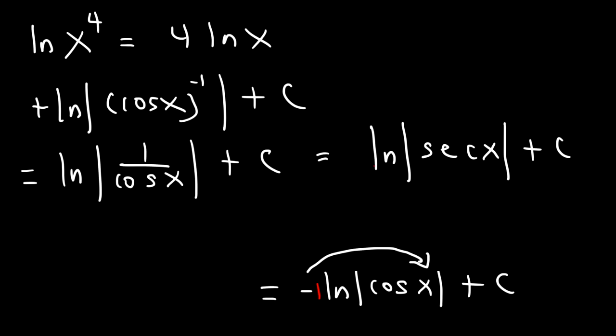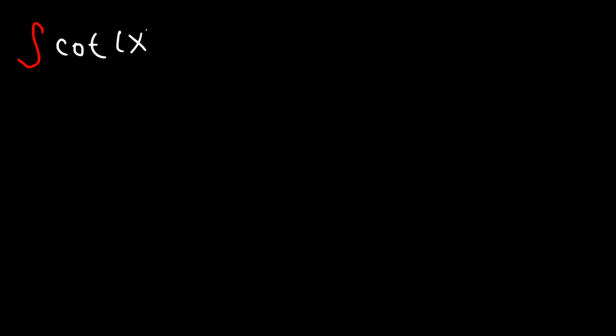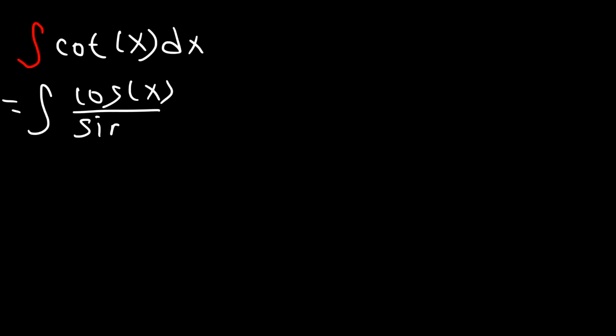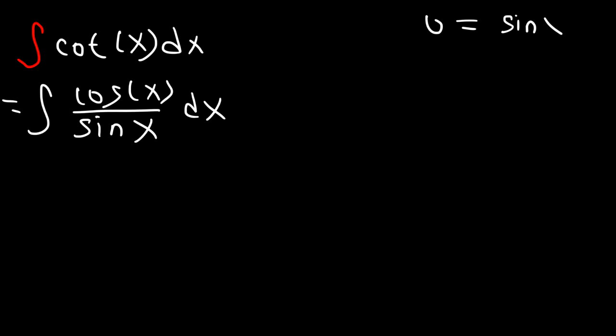For practice, let's find the integral of cotangent x. Following the same procedure, first convert cotangent into cosine divided by sine, then use u-substitution. Set u equal to the part on the bottom, which is sine, so du — the derivative of sine — is cosine x dx.